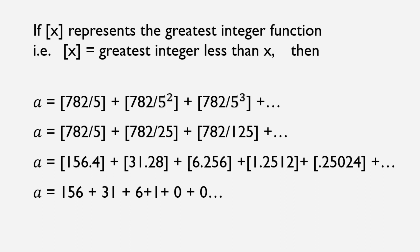0 plus 0 and so on, because after some time on dividing further, we will get all the numbers less than 1, and the greatest integer function or bracket of that number will be 0. So we get a is equal to 194, and that is our solution.